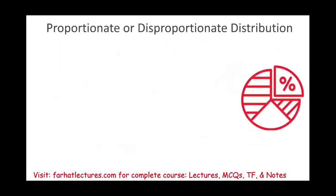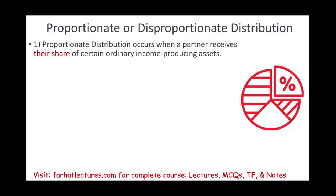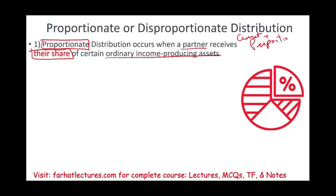Within distribution, we also need to differentiate between proportionate and disproportionate distribution. Proportionate distribution means you receive your share — if you own 30%, you get 30% of that distribution of certain ordinary income-producing assets, meaning you are proportionally sharing. We will be working specifically with current and proportionate distribution.